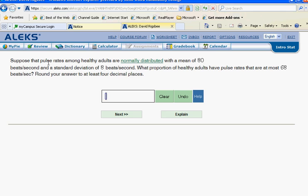Now suppose that pulse rates among healthy adults are normally distributed with a mean of 80 and a standard deviation of 8. Okay, so they're telling us enough information about our normally distributed values that we can set up our chart as we've done before. And then they ask this question: what proportion of healthy adults have pulse rates that are at most 68 beats per second?